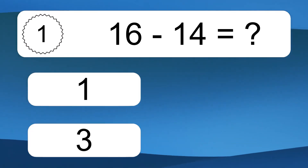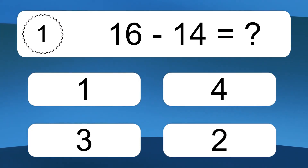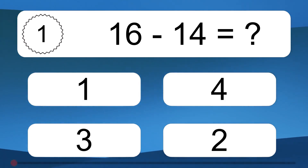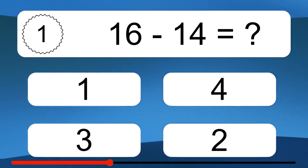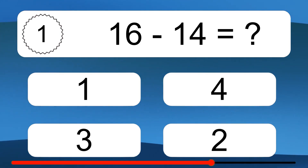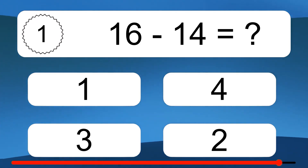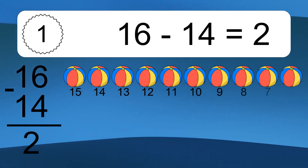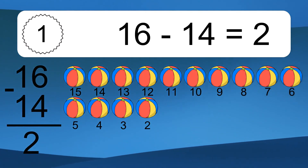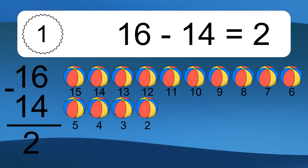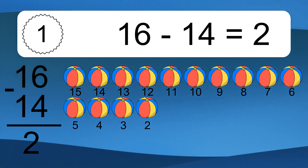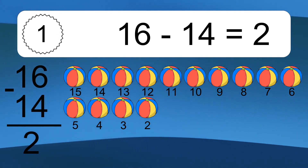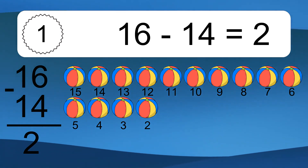16 minus 14 equals what? 16 minus 14 equals 2. Let's count it: 15, 14, 13, 12, 11, 10, 9, 8, 7, 6, 5, 4, 3, 2.